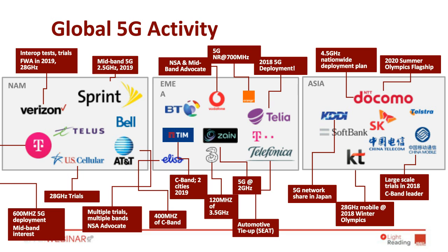Across Europe, there's a big ramp in activity. Telia Company, the Scandinavian incumbent, said it would launch a commercial 5G service in late 2018 — a limited service, but they were first to launch LTE and want to do the same with 5G. In 2019, Telecom Italia Mobile said it would cover two cities in southern Italy including some of the largest container shipping ports in Europe, showing it's not just consumer smartphone services but also industrial applications.